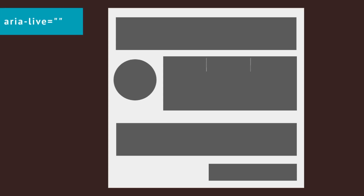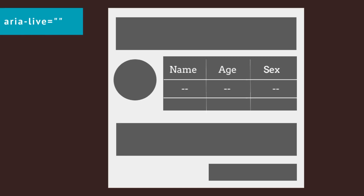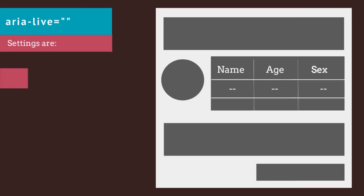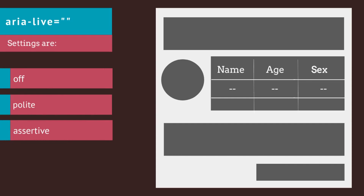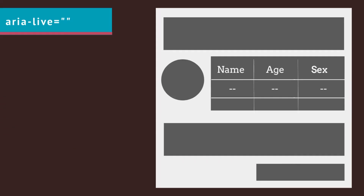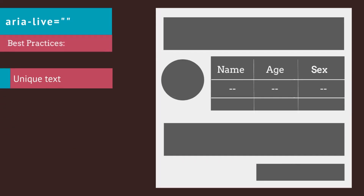Next we have the aria-live attribute, which provides a way to programmatically expose dynamic changes that can be announced by assistive technologies. Screen readers will announce the updates when the user is idle or not interacting with the page. Aria-live should be used for important updates that are not so rapid as to be annoying. Possible settings are off, polite, and assertive.